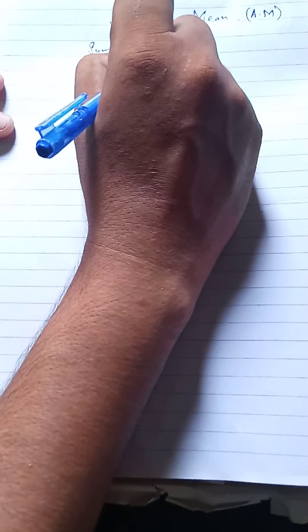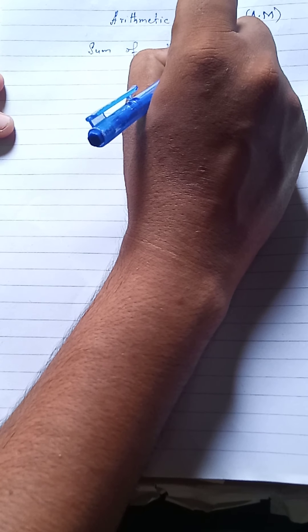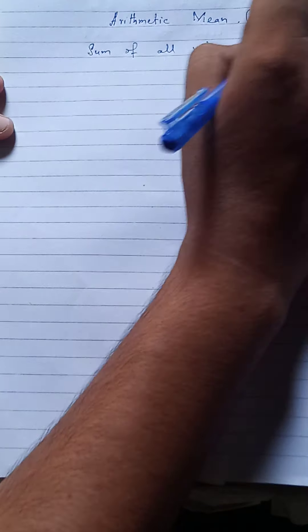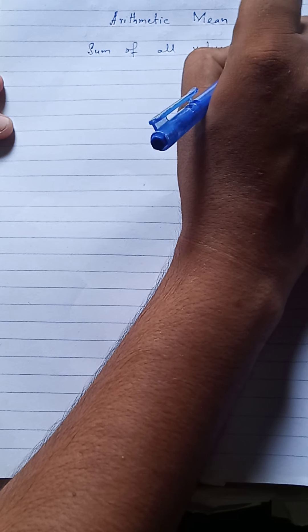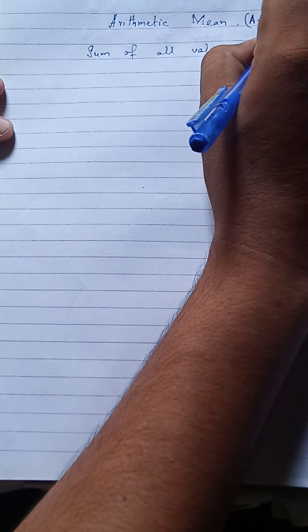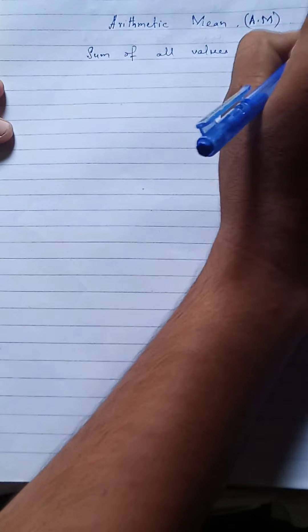Today's topic is Arithmetic Mean. Arithmetic Mean. Sum of all values divided by number of observations.